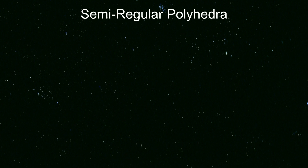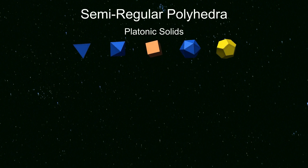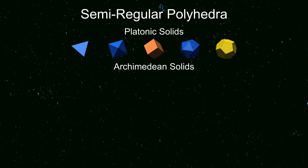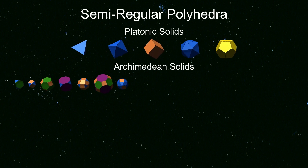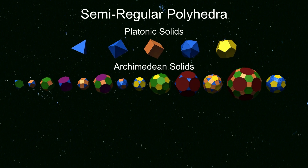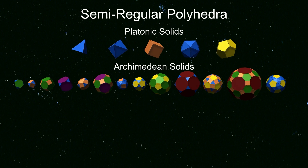First, we have the five Platonic solids, with all faces identical. Second are the 13 Archimedean solids — polyhedra with more than one face type and full three-dimensional symmetry.